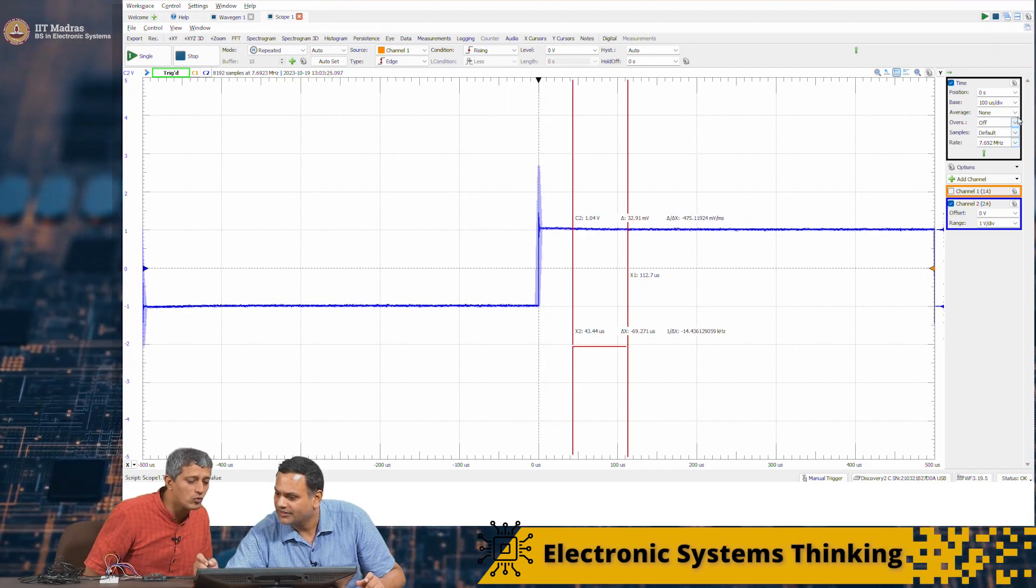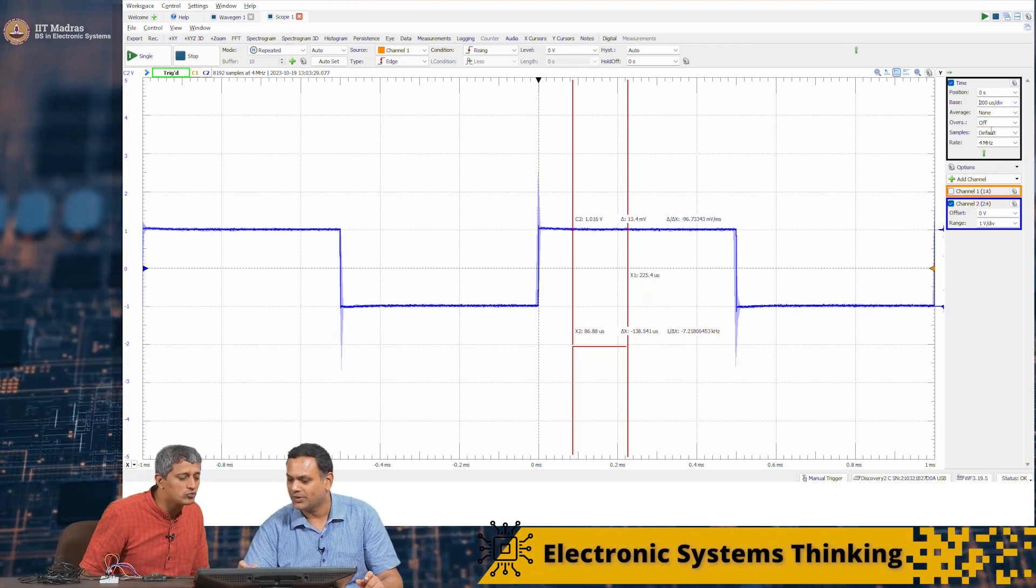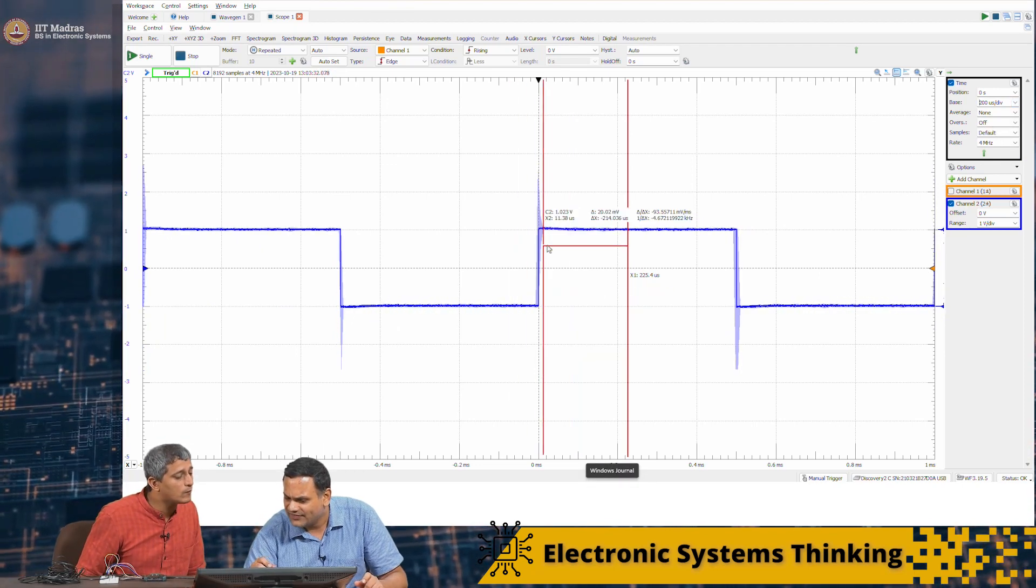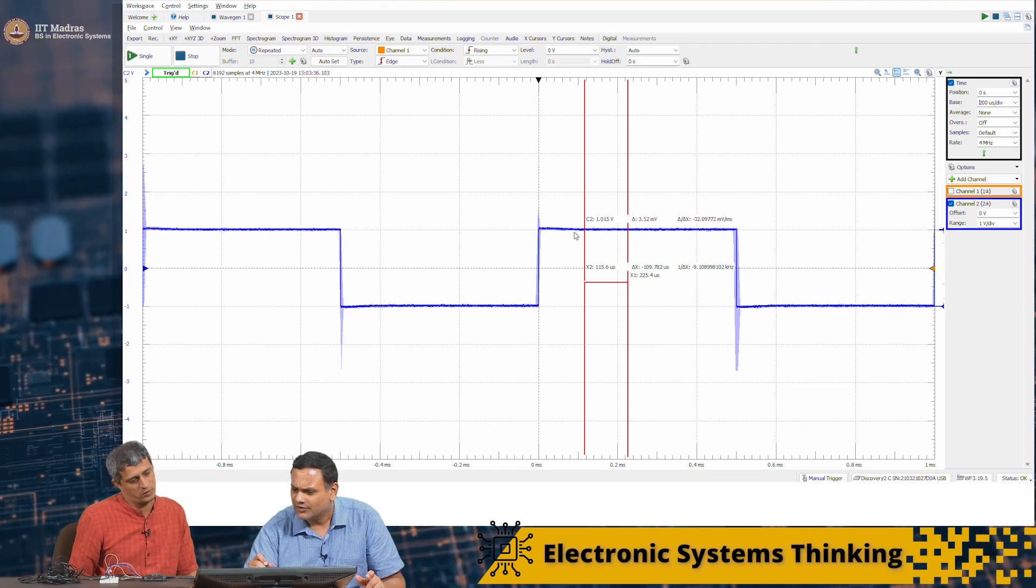Let me go back to some 100 microsecond per division. Little bit wider maybe. So maybe 200 microsecond but this shows me two periods. And I can see the ringing is very small. It is almost non-existent.